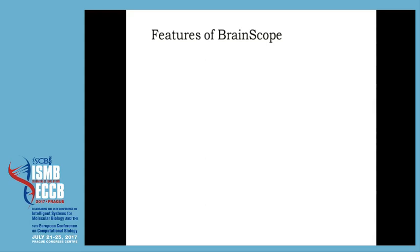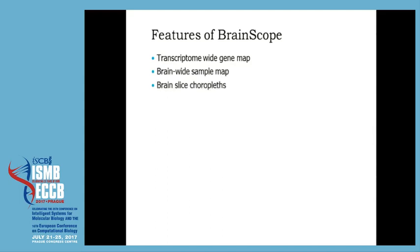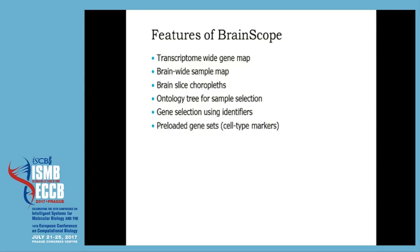So the features we've seen in BrainScope: a transcriptome-wide gene map with all the genes, a brain-wide sample map with all the different parts of the brain from the Allen Brain Atlas, brain slices as choropleths giving a spatial indication of where genes are expressed or where samples were taken from, and an ontology tree showing the hierarchical structure of the atlas where you can select samples. There's also gene selection by uploading identifiers or pasting them in, using Entrez identifiers or gene symbols, and preloaded gene sets such as cell type markers.